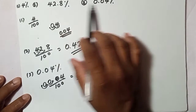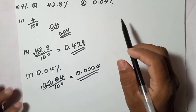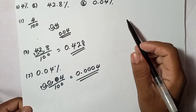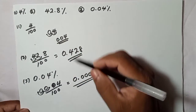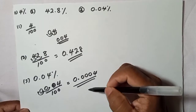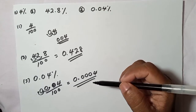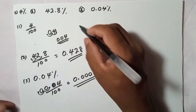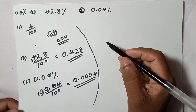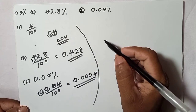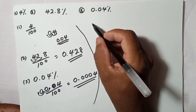So those three values — 4%, 42.8%, and 0.04% — converted as decimal numbers give us those answers. Now let's look at how to convert all three as fractions, which requires a little more work but is still straightforward.